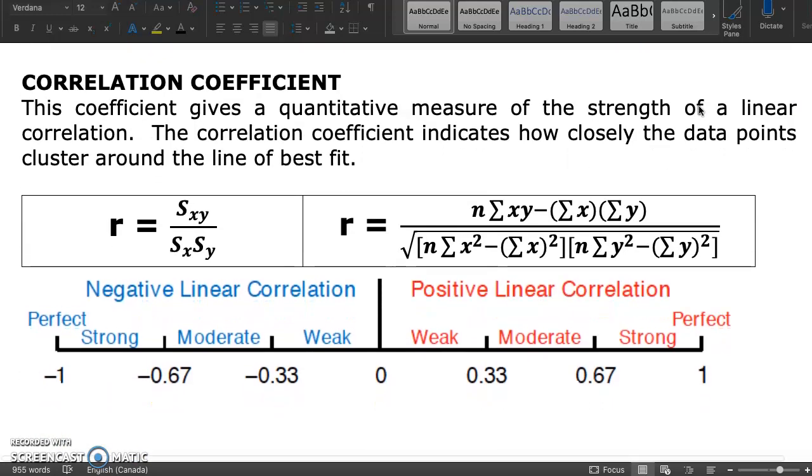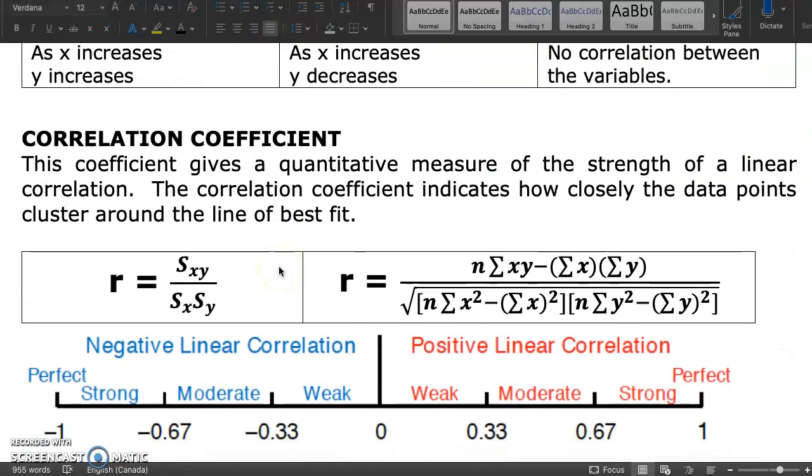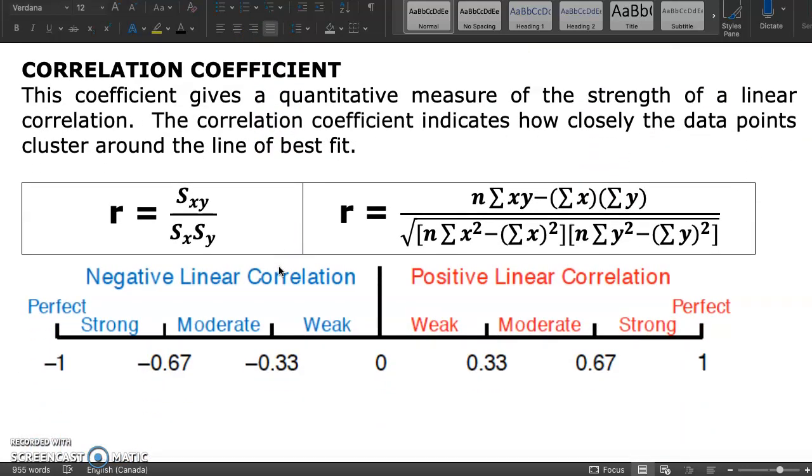We've seen visually that we can discuss the relationship between these two variables. However, we need to be able to quantify the strength of this relationship. Carl Pearson gave the definition for the correlation coefficient. This coefficient gives the quantitative measure of the strength of a linear correlation. The correlation coefficient indicates how closely the data points cluster around its line of best fit.